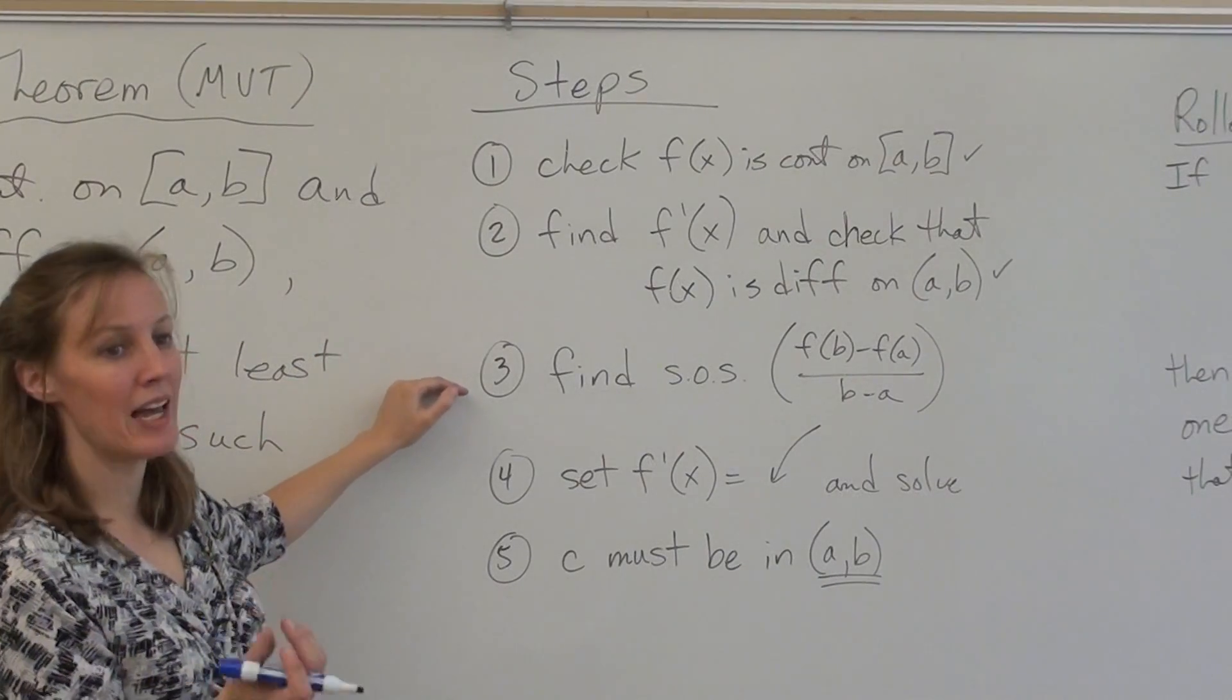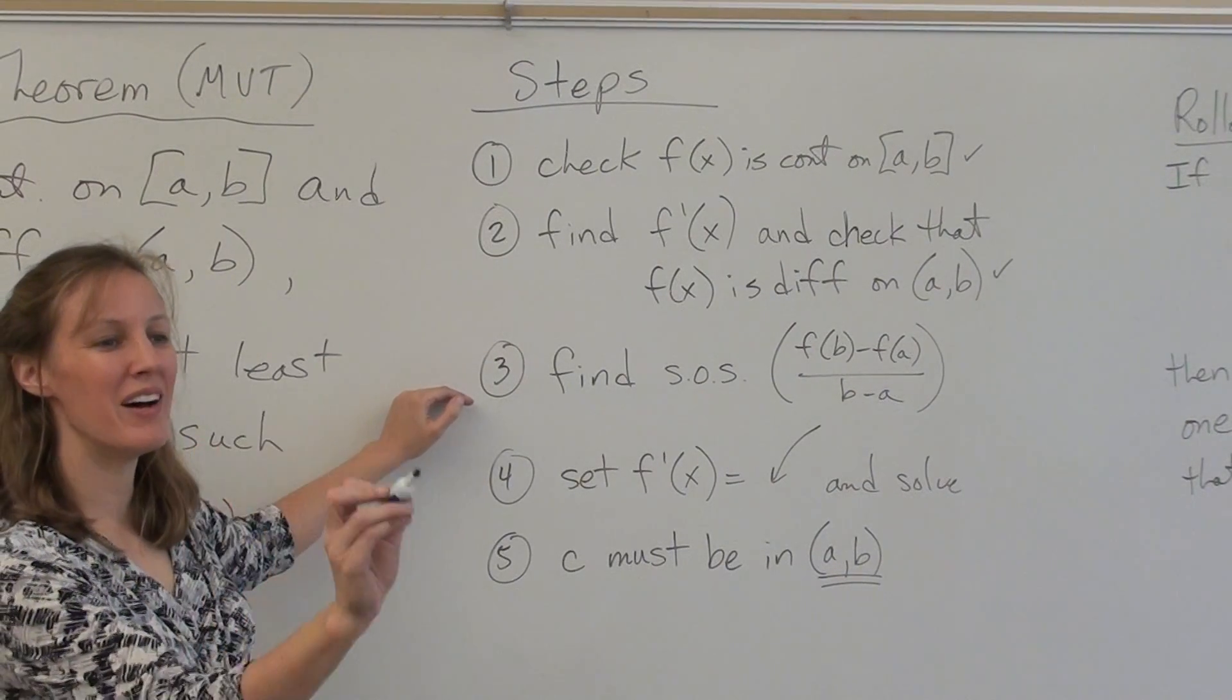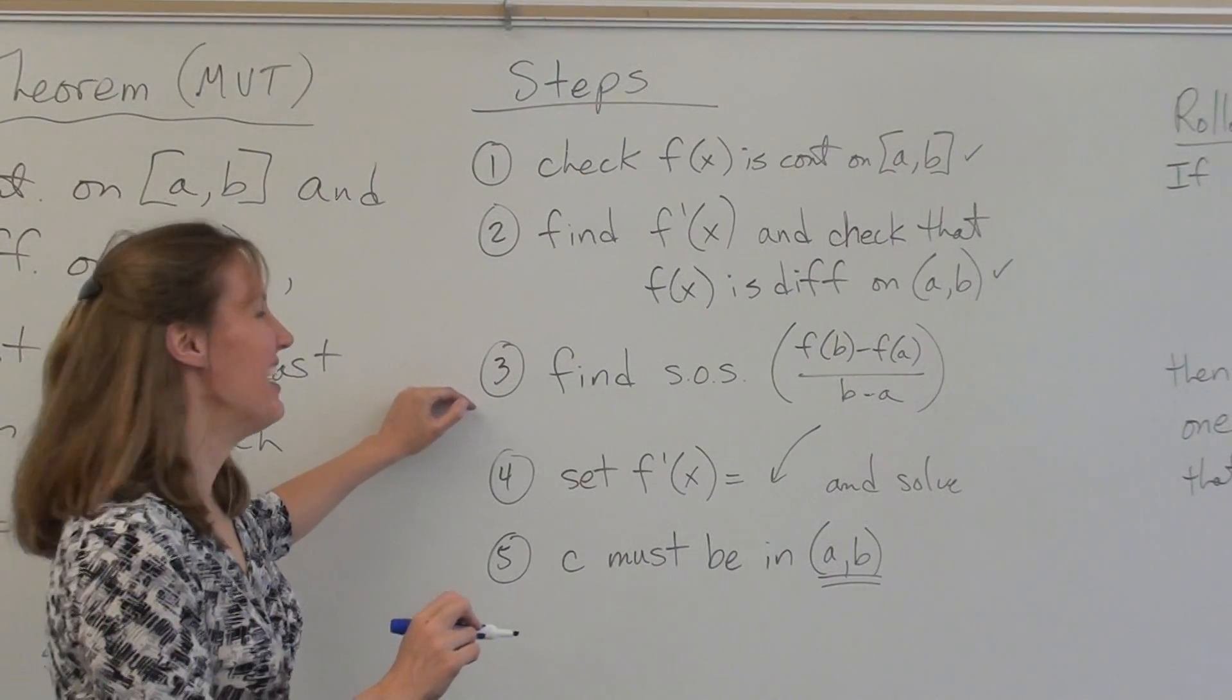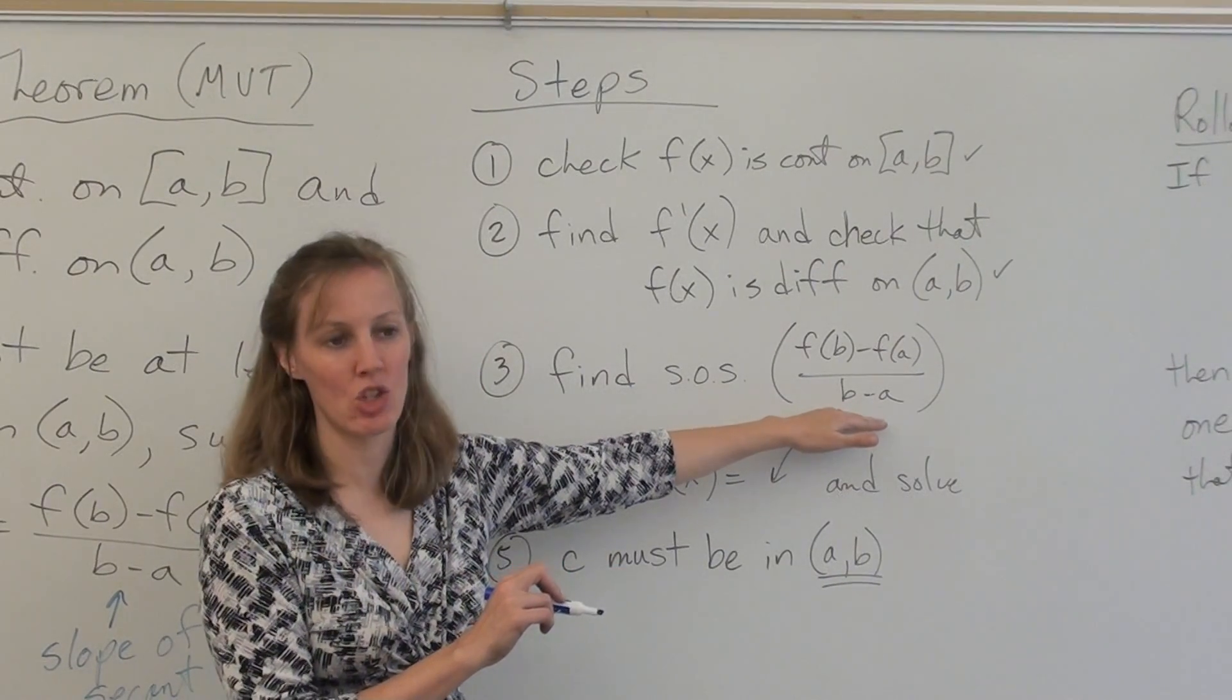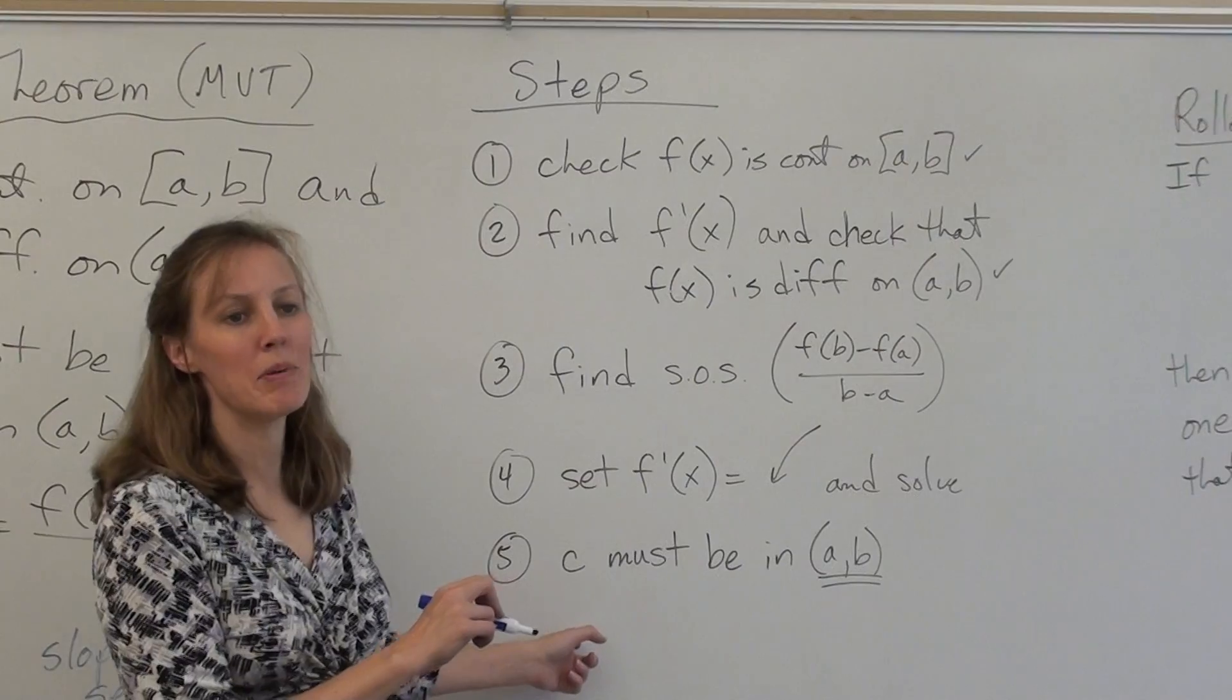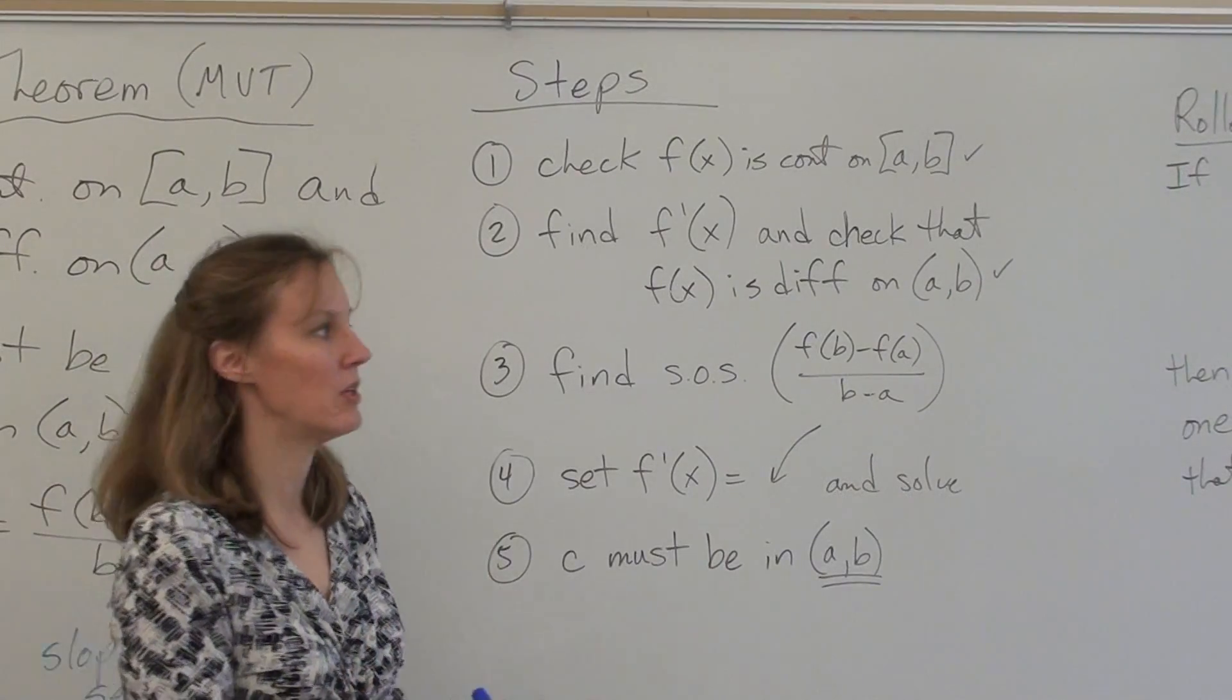The next thing you do is you find SOS. What do you think SOS stands for? Slope of secant. Very good. SOS stands for slope of the secant. F of B minus F of A over B minus A. You set your derivative equal to that, whatever number you get there, and you solve it. C has to be in the interval from A to B. C has to be in that open interval.